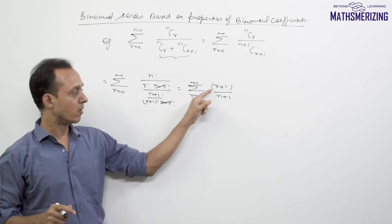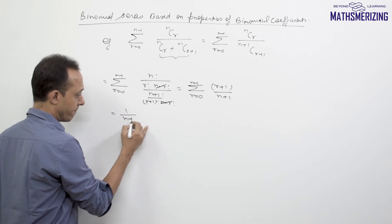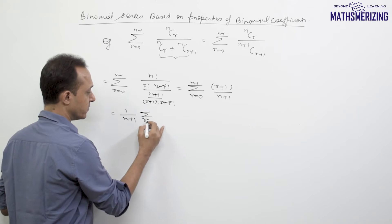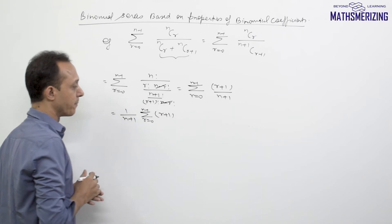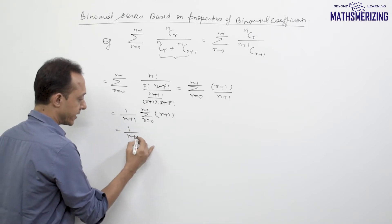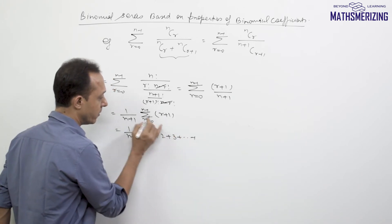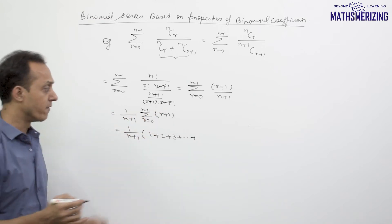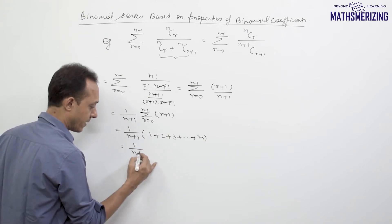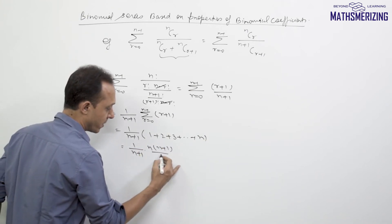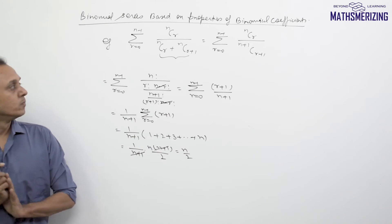Since the summation is in terms of r, not n, I can take (n+1) out: 1/(n+1) times summation from r=0 to n-1 of (r+1). This series is 1+2+3+...+n — the sum of the first n natural numbers — which is n(n+1)/2. So (n+1) cancels and the result is n/2.